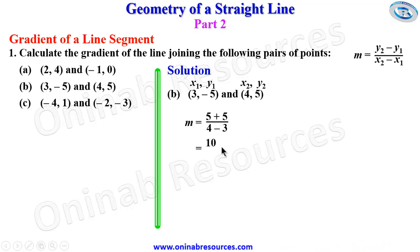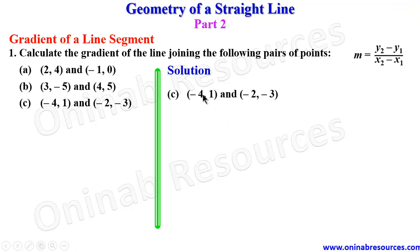This gives us 10 over 1, and 10 over 1 gives 10, which is the gradient of the line joining the two points. So we go to C. We have negative 4, 1 and negative 2, negative 3.